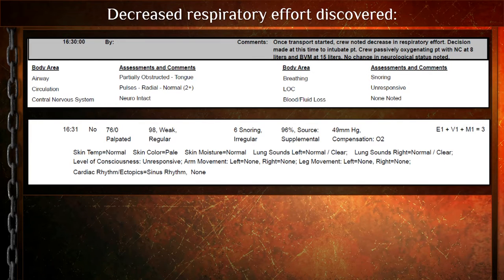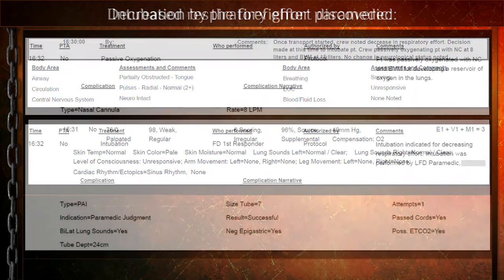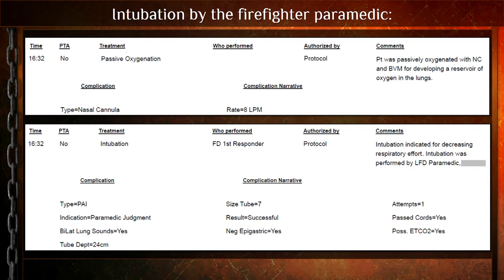Fire crew rode in with the ambulance. As transport started, respiratory effort continued to decrease, and the decision was made to intubate. Intubating a dialysis patient is a whole new set of problems — different drug selection, blood pressure wasn't great, so post-care options were limited. They maintained BVM ventilation and had capnography in place, showing the patient was trapping at an end-tidal CO2 of 49. They performed passive oxygenation at eight liters via nasal cannula, and the fire paramedic successfully intubated with a 7.0 tube.